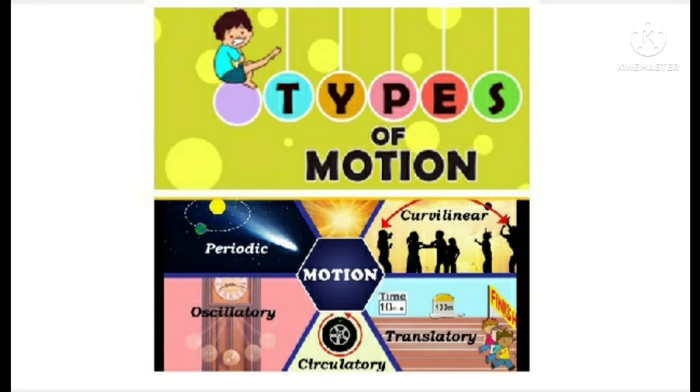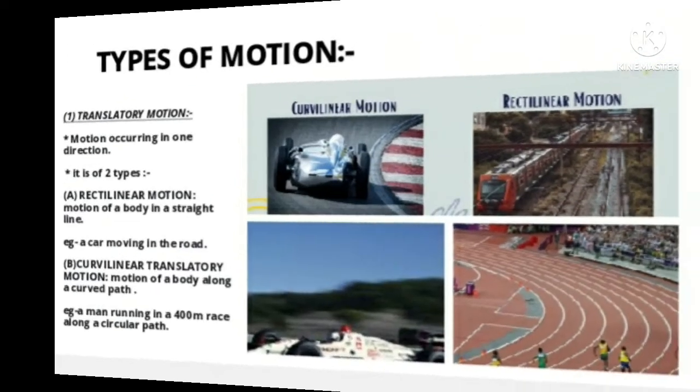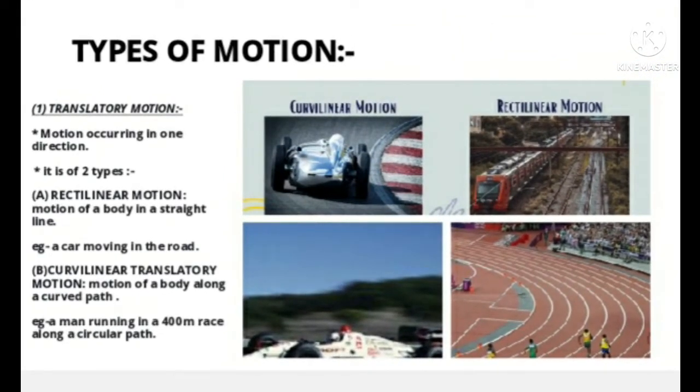Types of motions: periodic, curvilinear, translatory, circulatory, oscillatory. Rectilinear motion is motion occurring in one direction, the motion of a body in a straight line. Example: a car moving in a straight road. Curvilinear motion example: a man running in a 400 meter race along a circular path.